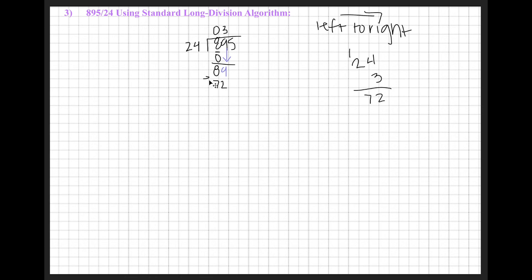Then we're going to subtract 89 minus 72. 9 minus 2 is 7, 8 minus 7 is 1, so we're left with this 17. But then working to the right, we're going to bring down our 5.